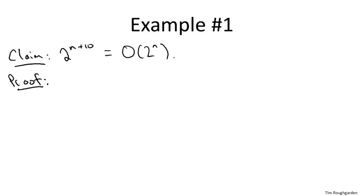So how would one prove such a claim? Well, let's go back to the definition of what it means for one function to be big O of another. What we have to prove is we need to show that there exists two constants such that for all sufficiently large n, meaning n bigger than n naught,